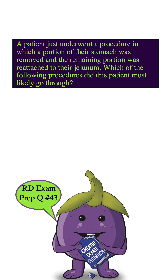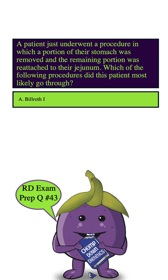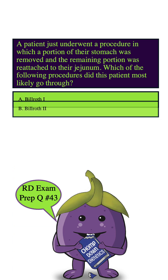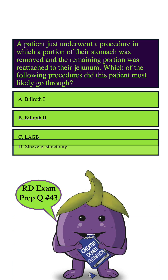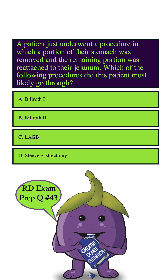A patient just underwent a procedure in which a portion of their stomach was removed and the remaining portion was reattached to their jejunum. Which of the following procedures did this patient most likely go through? A. Bilroth 1, B. Bilroth 2, C. LAGB, D. Sleeve gastrectomy. Let's highlight our key words: a portion of their stomach was removed, remaining portion was reattached to their jejunum.